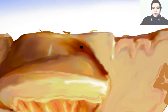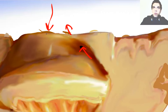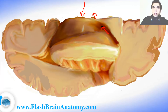This is the foramen of Monroe. If we go inside of that foramen, we would exit here on the medial side of this model. I will illustrate this model from the medial point of view in the video about the third ventricle, because that is the third ventricle over there. When you enter the foramen here, you actually enter the third ventricle and you exit the lateral ventricle.